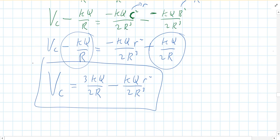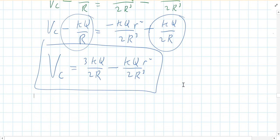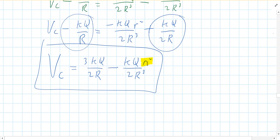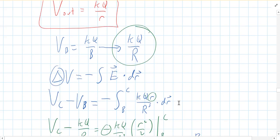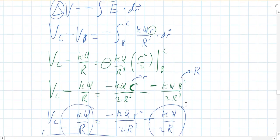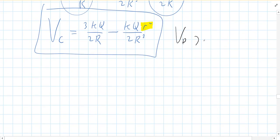That is the voltage anywhere inside the fuzzy ball of charge for any radius little r. Note that the only variable is r squared, so this is a quadratic function. Finally, for point D at the dead center of the ball, little r equals zero, so the voltage at D is simply 3kq over 2 big R — the maximum voltage in this situation.